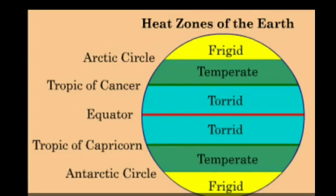Next we saw about the various heat zones of the earth. Apart from other latitudes, we saw about the zero degree equator, the temperate zone, the torrid zone, and the frigid zone. In the center is the zero degree equator, then the temperate zone, then the torrid zone, and near the poles is the frigid zone.